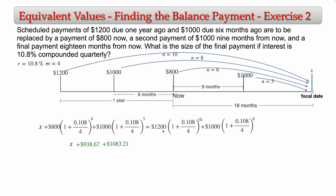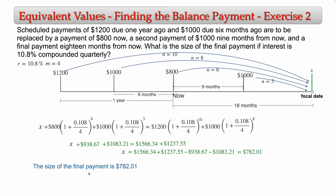Computing the right side: 1200 × (1.027)^10 = 1566.34, and 1000 × (1.027)^8 = 1237.55. Moving the replacement amounts to the right: X = 1566.34 + 1237.55 − 938.67 − 1083.21. Using a calculator, X = 782.01. So the size of the final payment is $782.01. That's the solution to the second and last problem in this video. I hope you found this useful, thank you.